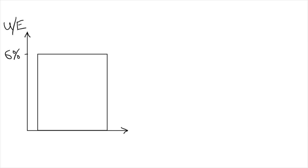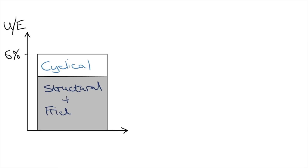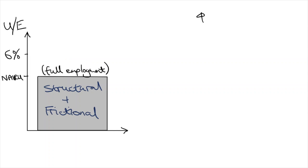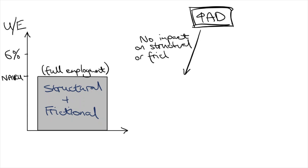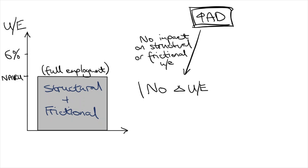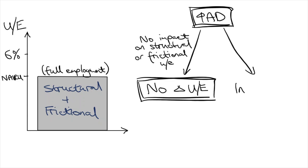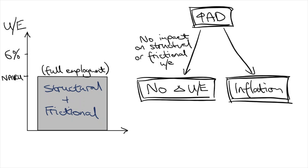There are multiple explanations for this. One is that the unemployment rate is not just made up of cyclical unemployment — it also includes structural unemployment and frictional unemployment, which cannot be fixed with a simple increase in aggregate demand. An increase in aggregate demand at full employment will do nothing to lower unemployment, but just cause wages to go up for employed workers, leading to inflation.